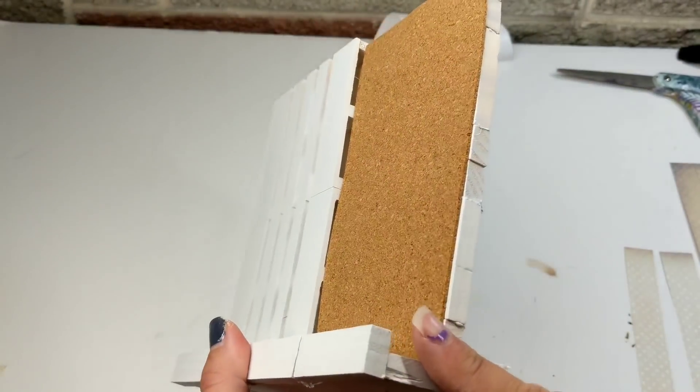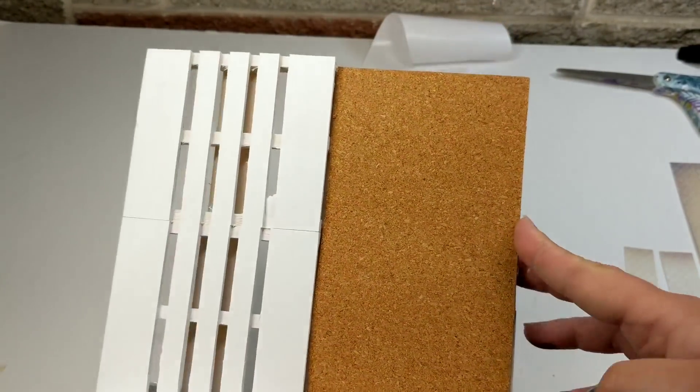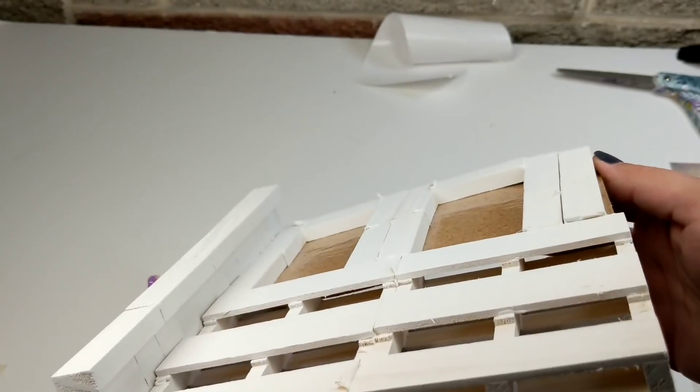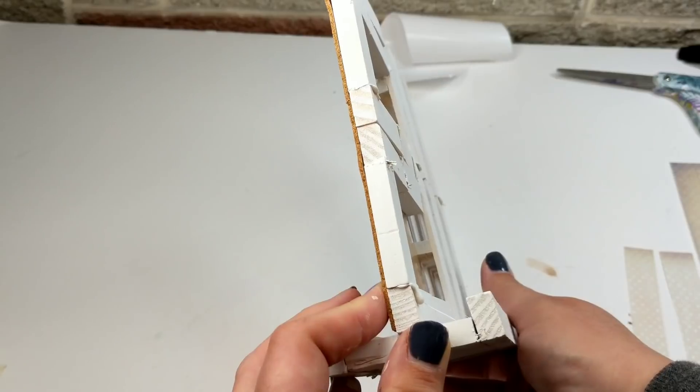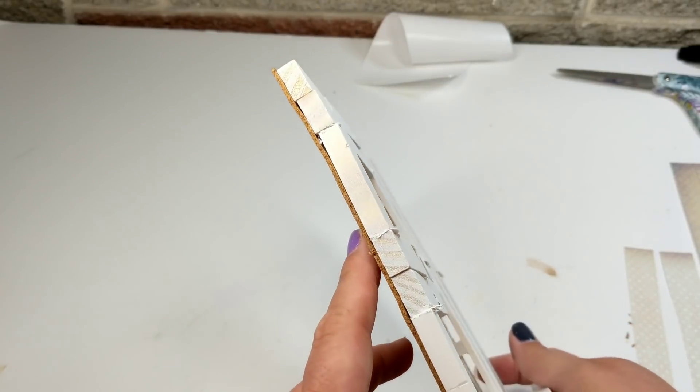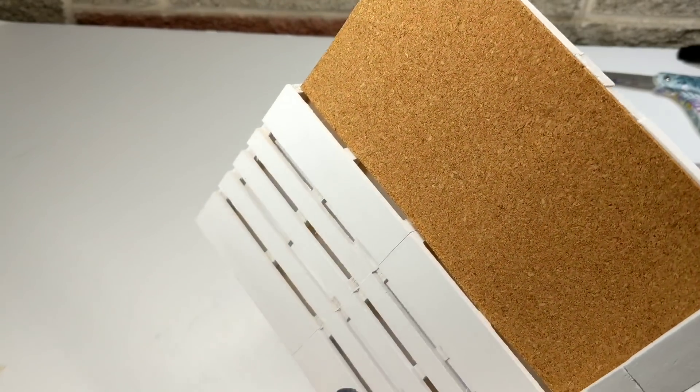Cut it to size. And you're going to glue it onto our little tumbling block side. And it also has adhesive on the back. It's not a big deal if you don't glue it because it sticks.